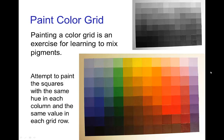One thing people do to learn how to mix paint is to paint a color grid. In the color grid, each column represents a similar hue, each row represents a similar value, and you try to achieve the highest possible saturation in all cases. This is a color grid I painted — from the black-and-white scan, you can see it was not entirely successful in having even value across each row, but that was the attempt.